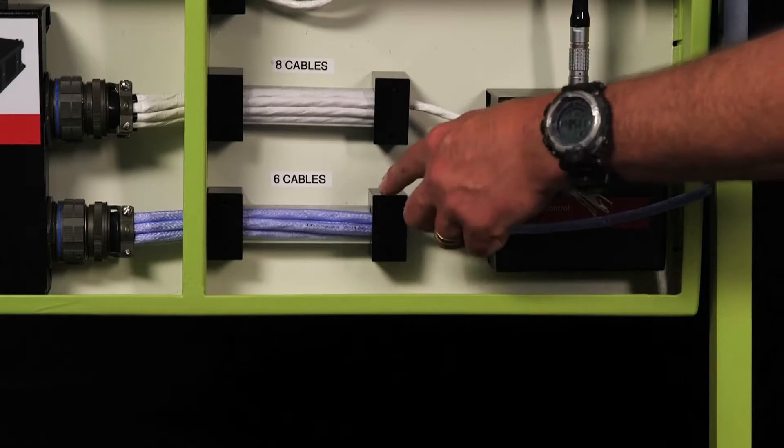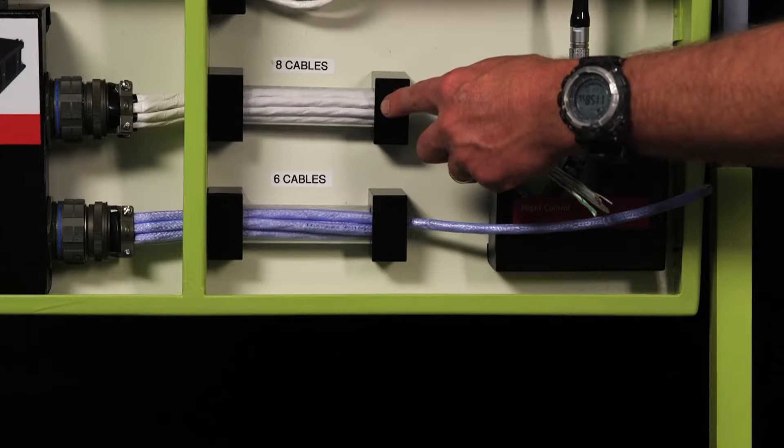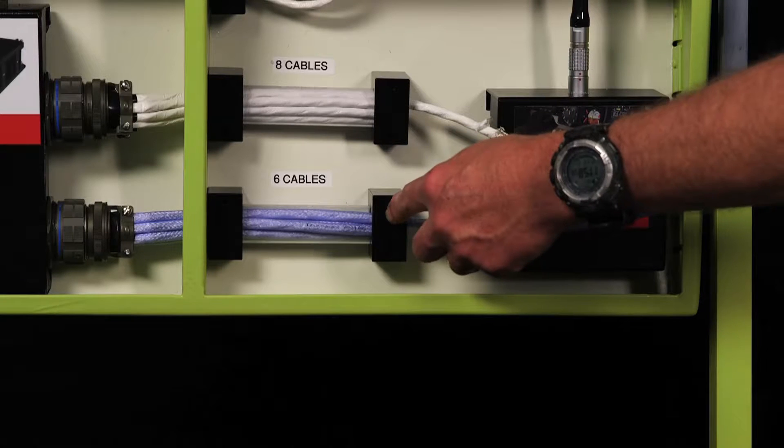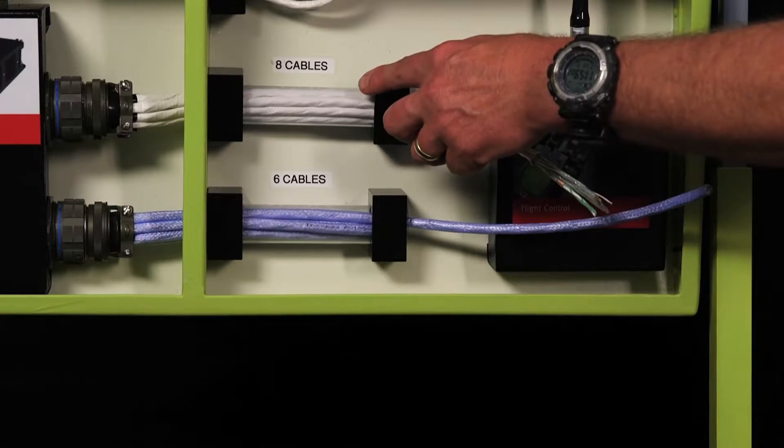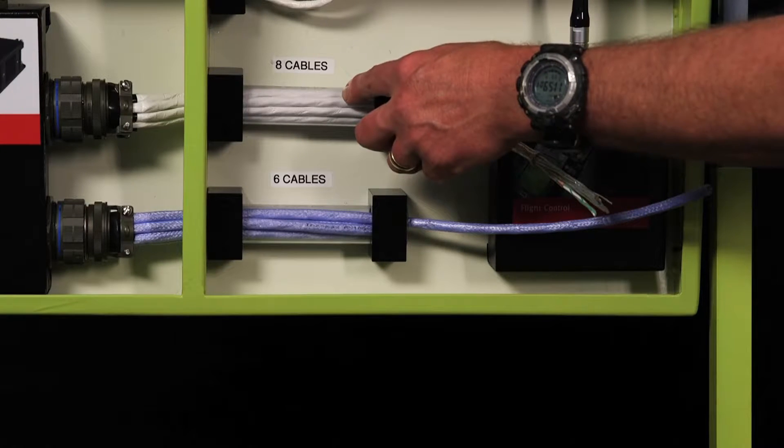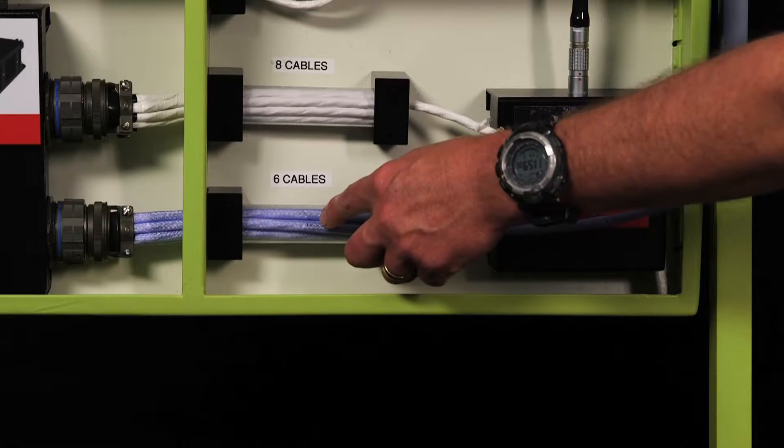This section compares two different types of cables. The top one is the Gore aerospace ethernet cable and the bottom is a standard category 6a aerospace cable. They're both going through one inch holes. The Gore small size allows eight cables to go through while this one only allows six.